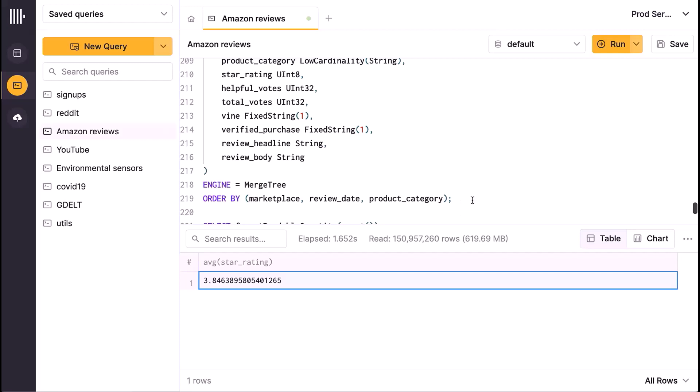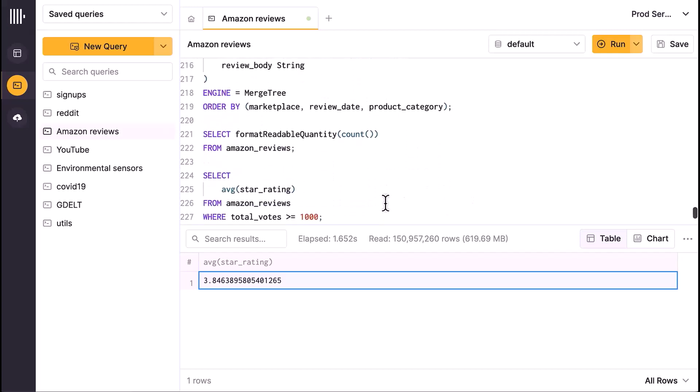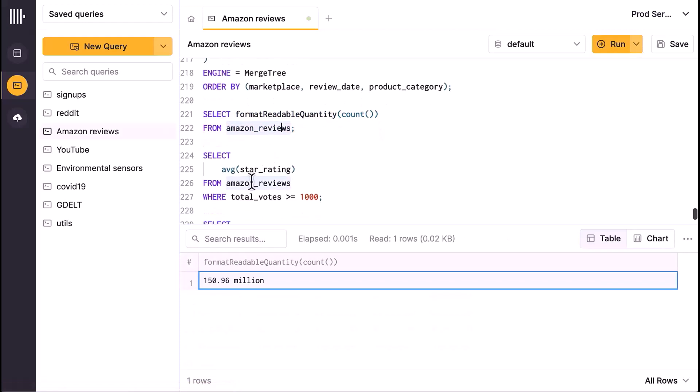If I write a query that doesn't filter off one of those values, then you'll see that it has to search every row. First of all, let's see how many rows we have. There's 151 million rows roughly. If I want to compute the average value of, let's say, this star_rating column, and I'm going to filter by total_votes greater than or equal to 1,000—well, total_votes is not up here in the primary key, and so ClickHouse had to query all 151 million rows roughly.